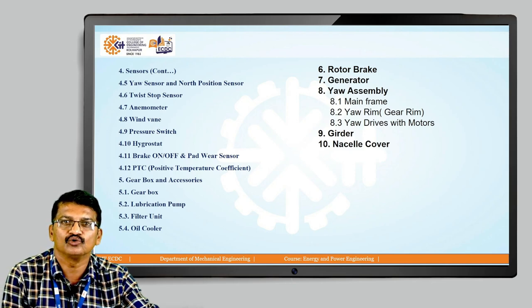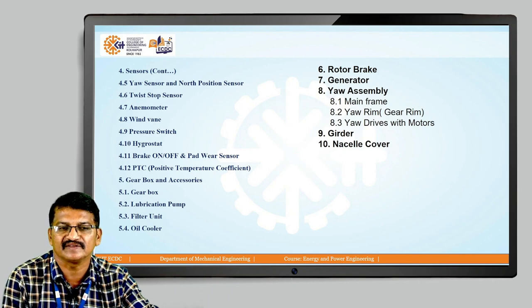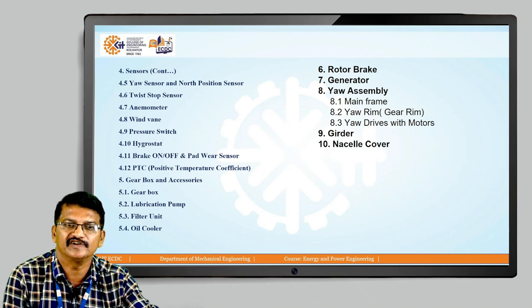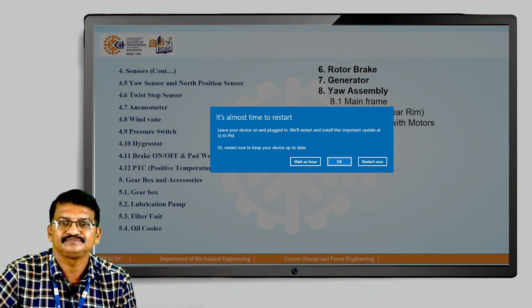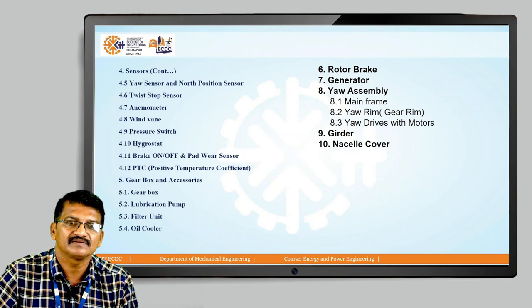Rotor brakes are generally provided on the high-speed shaft to stop the wind turbine. For the generator, doubly-fed generators are generally used. Even if the grid is working at low frequency, doubly-fed generators manage the output even when the grid frequency is very low.